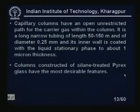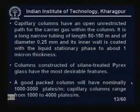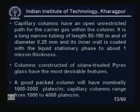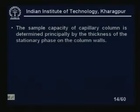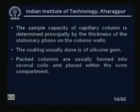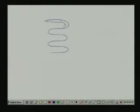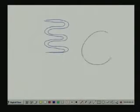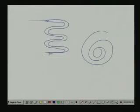Column constructed of silanized treated Pyrex glass have the most desirable features. A good packed bed column has nominally 1000 to 3000 theoretical plates per meter — more plates means better separation. Capillary columns range from 1000 to 4000 plates per meter. The sample capacity of capillary columns is determined principally by the thickness of the stationary phase on the column walls; the coating is usually silicon gum. Packed columns are formed into several coils placed within the oven compartment.